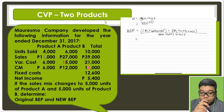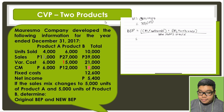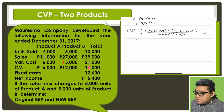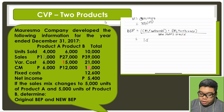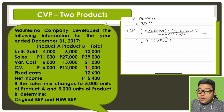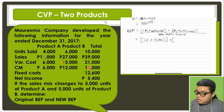What is the contribution margin per unit of product A? That is 6,000 divided by 4,000 units, giving us 1.5. Then, what is the contribution margin per unit of product B? That is 12,000 divided by 27,000, giving us approximately 0.44.